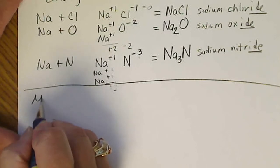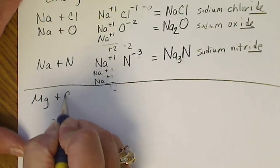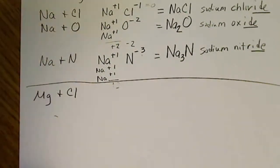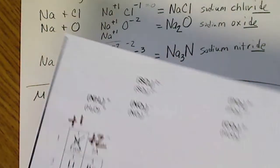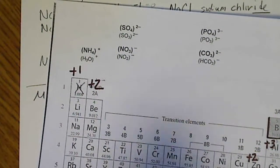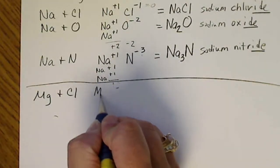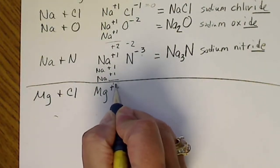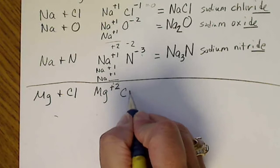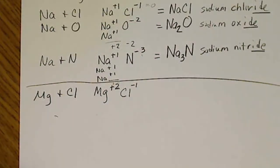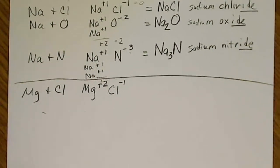So if we have magnesium and chlorine, we're going to find magnesium on the periodic table. Magnesium is a plus 2, so we'll write down the charge for magnesium. And chlorine is in the minus 1 column.